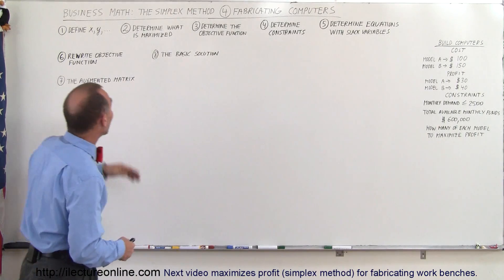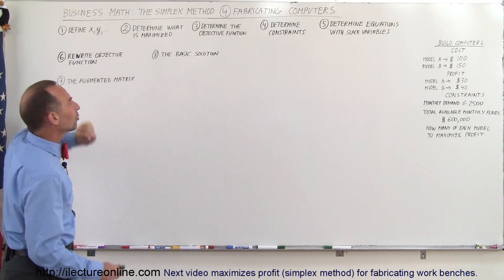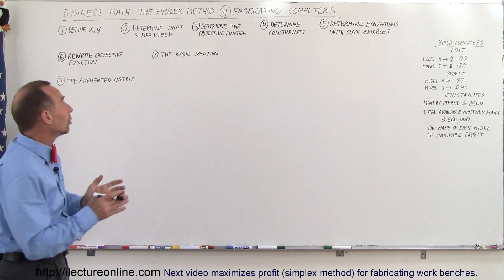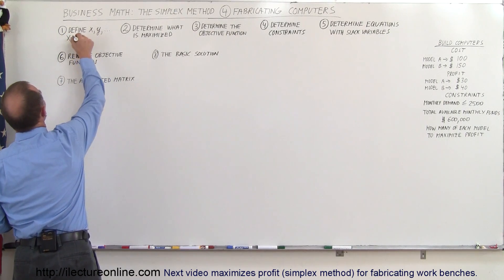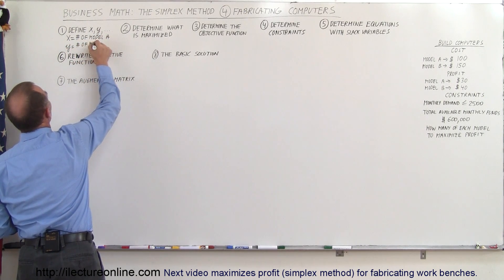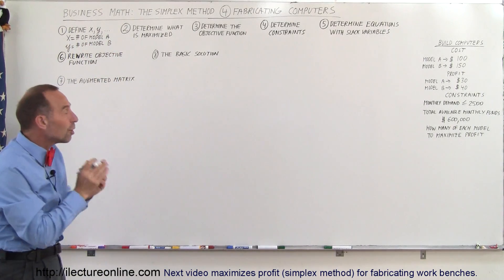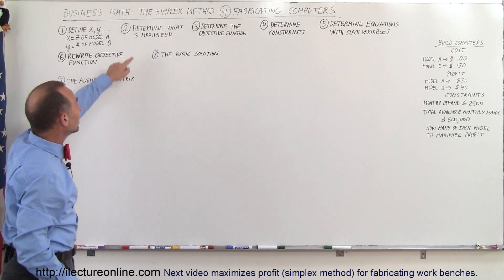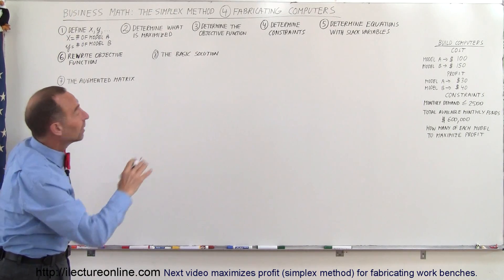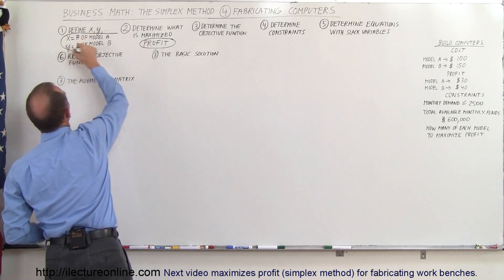We go through this very systematically. First, we define the variables. We let X equal the number of Model A we're going to build, and Y equal the number of Model B. It is very important that we define those variables very specifically. Then we determine what's being maximized — in this case we're solving a maximization problem, and we want to maximize the profit.